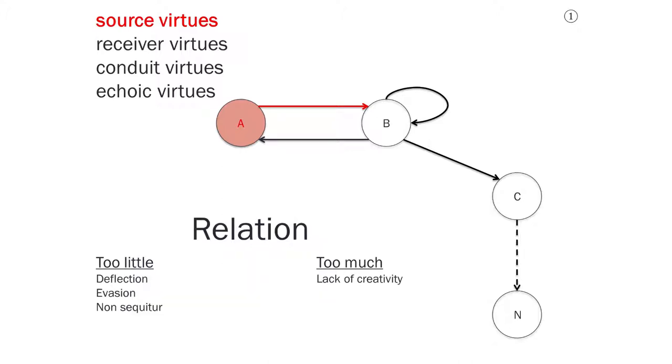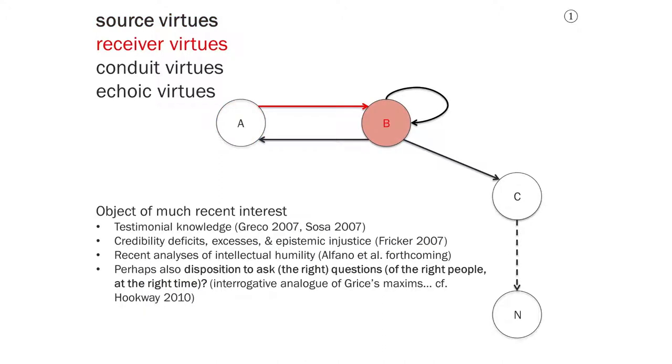In terms of the maxim of relation, someone who is too keen to stick to only what's relevant might lack creativity. They don't think of things that are somewhat relevant but only indirectly so. Whereas someone who goes too far in the other direction could be accused of engaging in evasion, deflection, and non sequitur. So if this is right, it suggests that there are source virtues related to not just honesty and sincerity and trustworthiness, as we saw before, but also to these topics that are discussed in the philosophy of language, namely the maxims of quantity, quality, and relation. It's less clear to me that the maxim of manner fits this kind of analysis, so I'll turn now to receiver virtues.